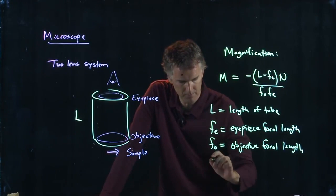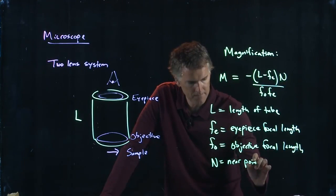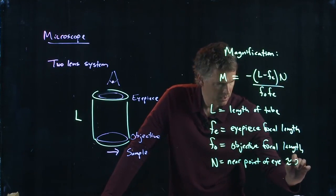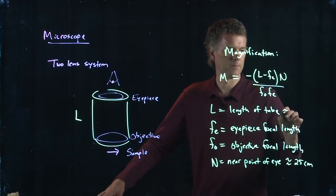N is the near point of your eye and that is usually written as 25 centimeters. Okay, length of the tube is usually about 16 centimeters.